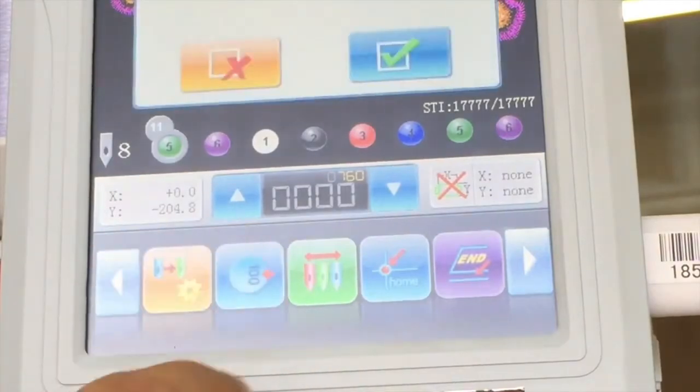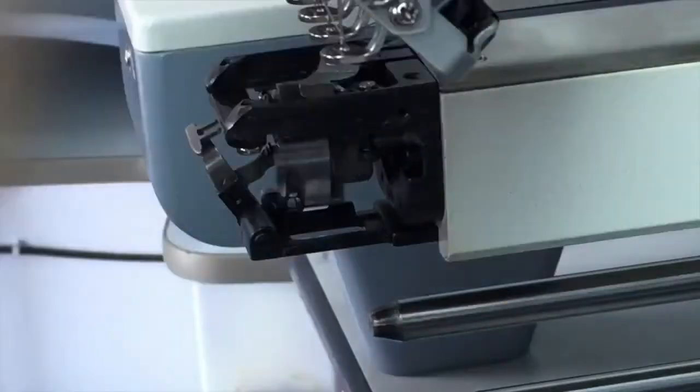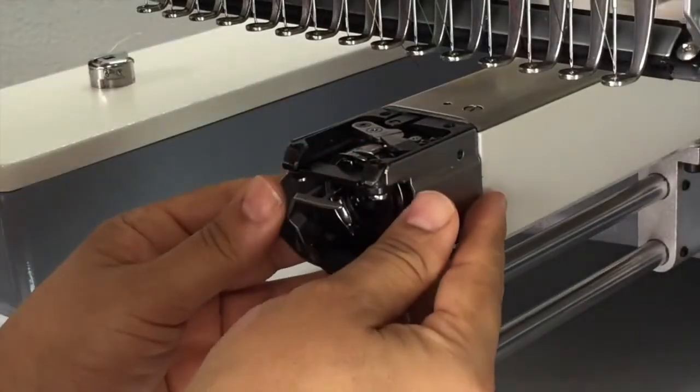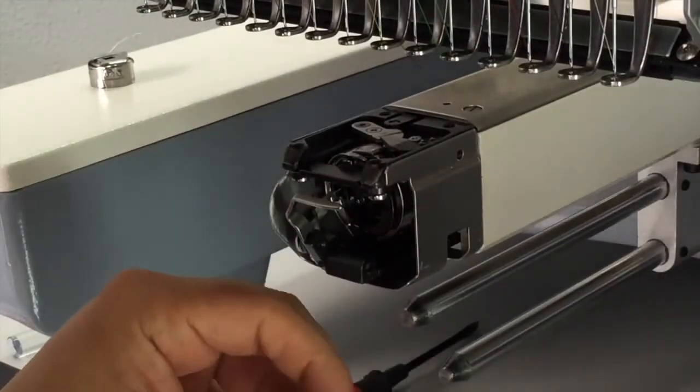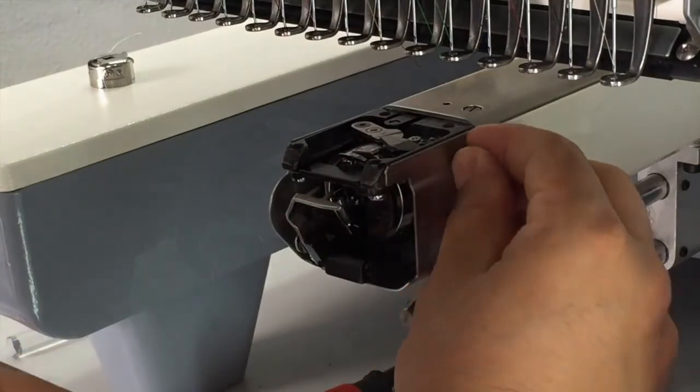Once you are finished, reset the main shaft by pressing the 100 degree icon. Then place back the cover, put the two screws on the side, and tighten them up.